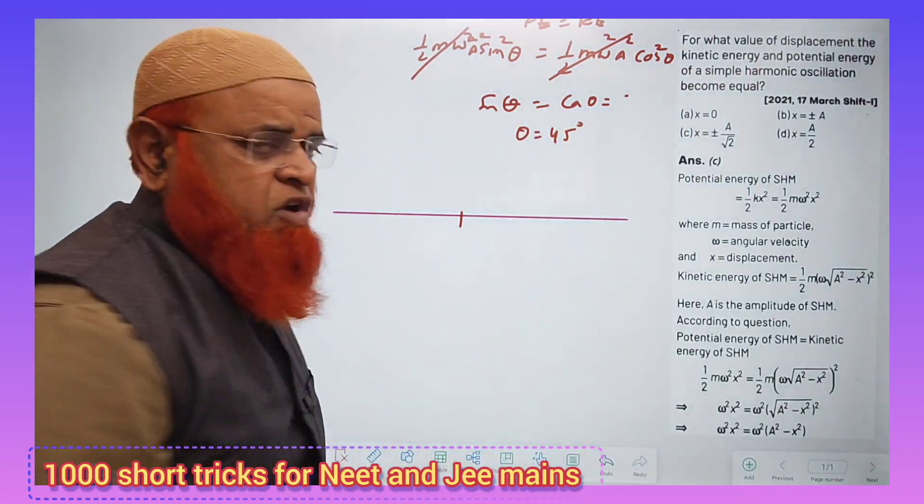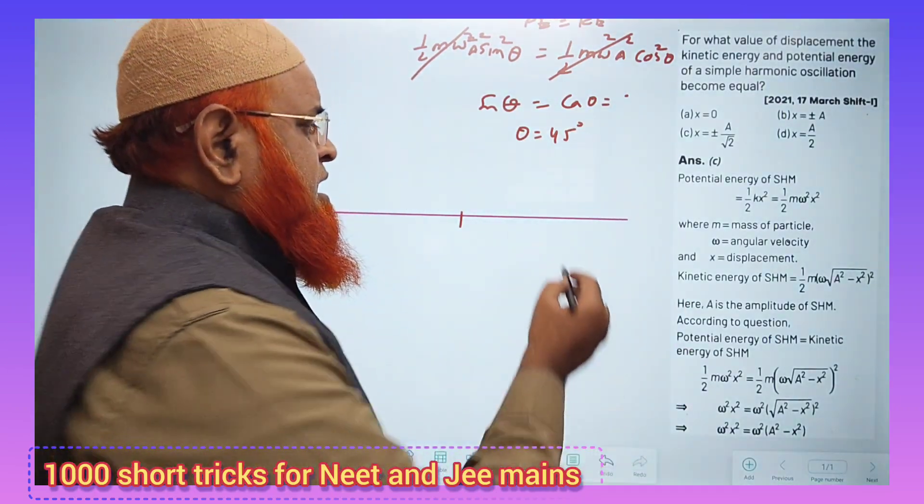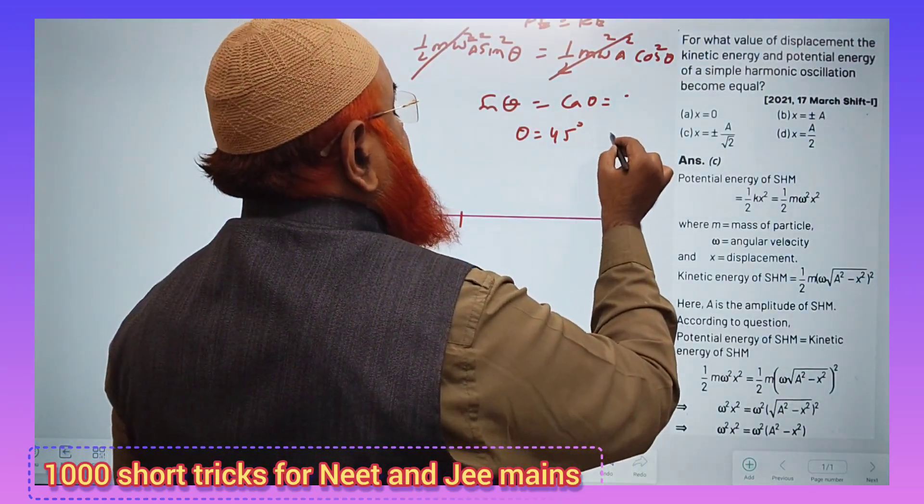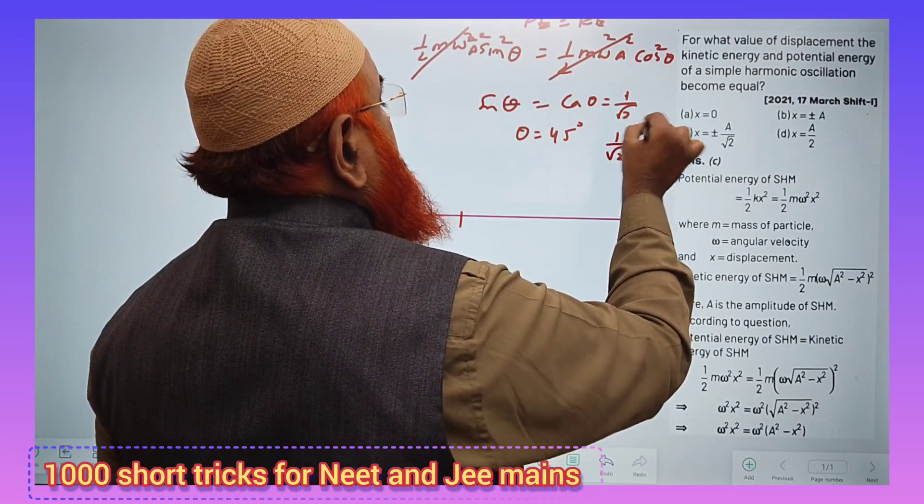And when theta equals 45 degrees, you know cos theta or sin theta, they are going to be equal. That is going to be 1 by root 2, which is nothing but 1 by root 2.